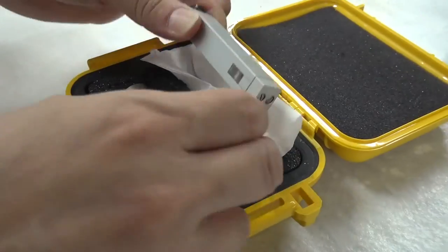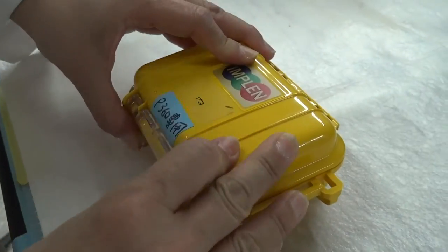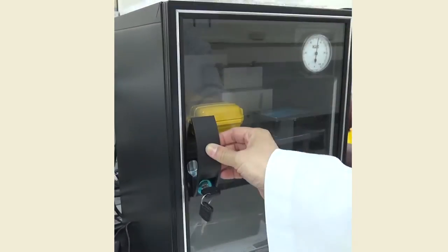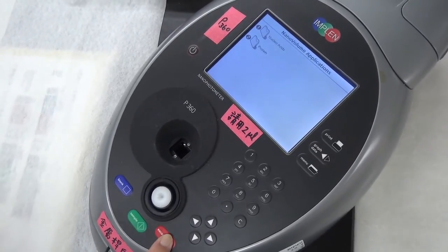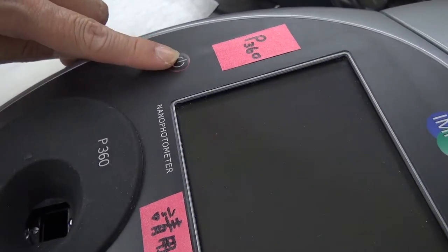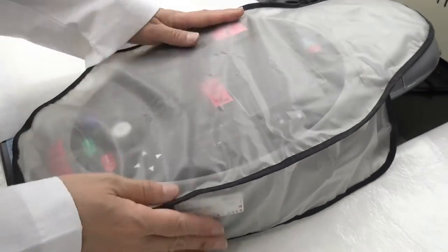19. Return the lid and cuvette into the box and store in a humidity control cabinet. 20. Exit the spectrophotometer control panel to the main menu and turn off the machine. Put on the dust cover.